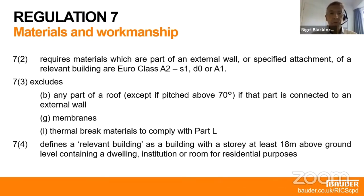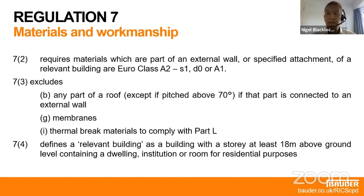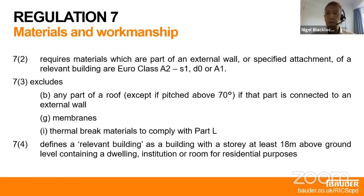I move on to Regulation 7, which I said earlier is the ban. It gives with one hand and takes with another. Regulation 7.2 indicates that materials in an external wall or a specified attachment need to be non-combustible, A1 or A2. But it does importantly exclude any part of a roof if that part is in connection with an external wall. There is an exception if it's a very steep roof above 70 degrees, as that is classed as a wall. Also excluded are membranes — all sorts of membranes, including waterproofing membranes — and also thermal break materials.